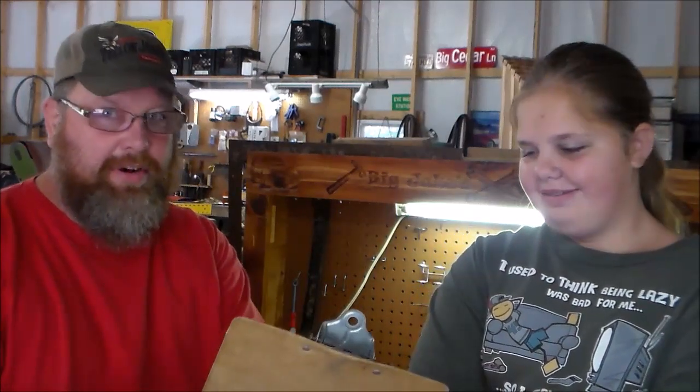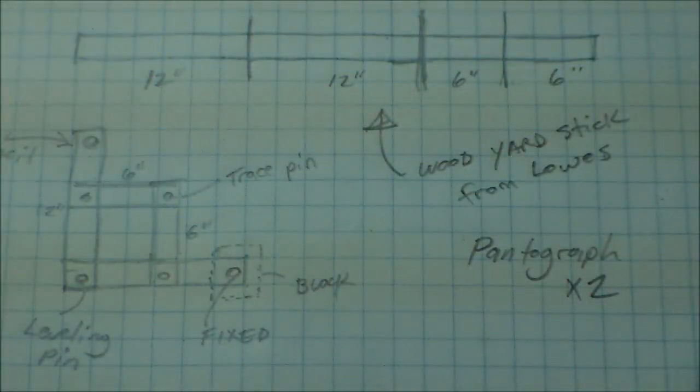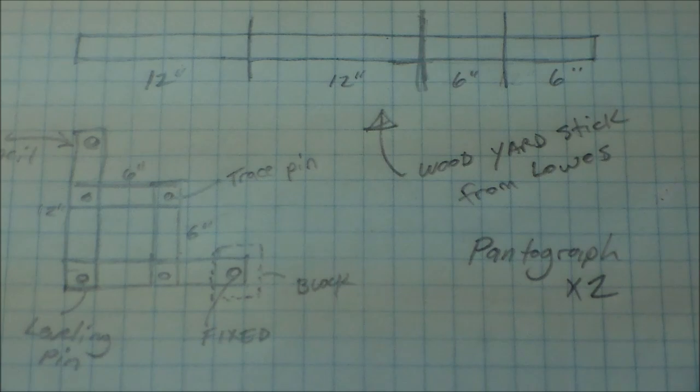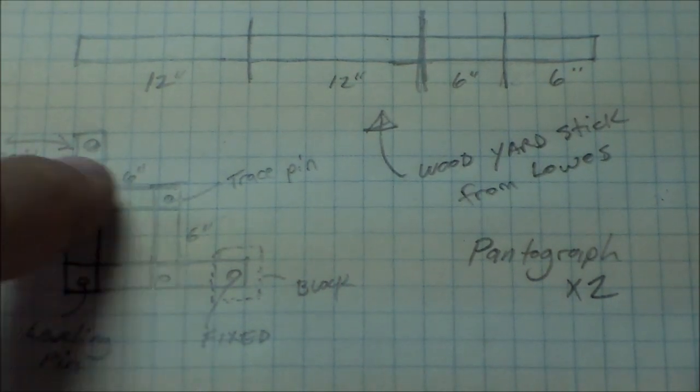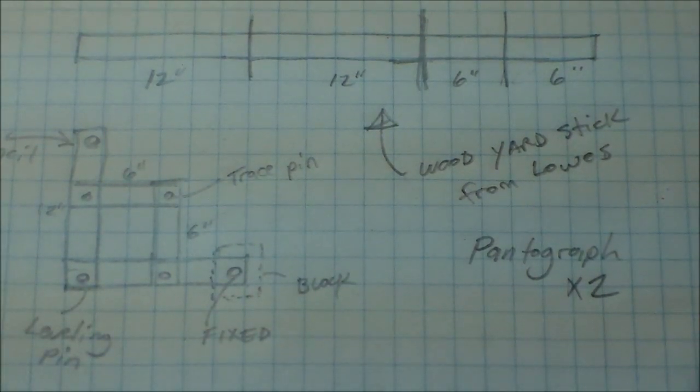You ready? Yeah. Alright. What are we making? A mother. What's that word right there? Pantograph? We're making a pantograph. I can't do this. Alright, here's our plan. What's this thing right here? A yardstick. A wooden yardstick. You can get them at Lowe's for about a dollar. This is what we're going to be building. This is going to be a pantograph that will enlarge your drawing by two. You know what a pantograph is? No. Alright, we're going to learn it.